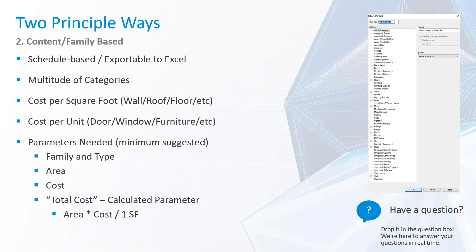Our second principal way is our content or family-based schedules. This is also exportable to Excel, and there are actually a few more categories in this type compared to a material takeoff. When talking about something such as a wall, roof, or floor, we typically want to consider cost per square foot. You can also consider cost per cubic foot if you are working in volumetric calculations such as concrete pours. There is also cost per unit, which comes into play when talking about doors, windows, furniture — kind of one entity that you can physically pick up.